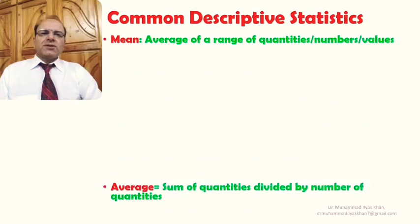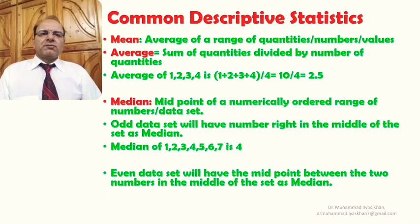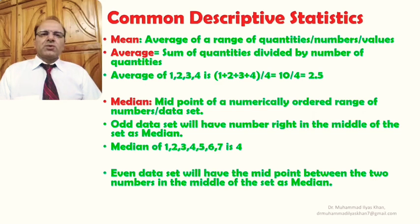Some common descriptive statistics include mean, which is the average of a range of values or numbers. The average is the sum of quantities divided by the number of quantities. For example, the average of the set 1, 2, 3, 4 is calculated as 1+2+3+4 divided by 4, which gives us 2.5. Mean or average is commonly used in research studies.